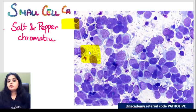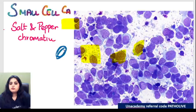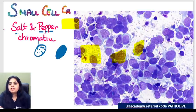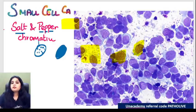Another finding in small cell carcinoma is salt and pepper chromatin. Pick any nucleus of your choice - the nucleus is not entirely blue. It has some blue areas and some white areas: blue-white-blue-white, dark-light-dark-light, just like salt and pepper. Small cell carcinoma: number one, Azopardi effect; number two, salt and pepper chromatin.